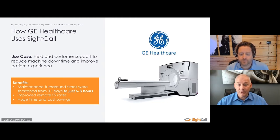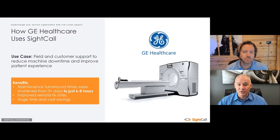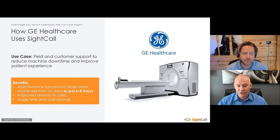GE Healthcare is another interesting example. They had a challenge in that they have medical imaging MRI machines located across different countries and continents that have to maintain very high uptime. Hospitals become reliant upon their medical imaging and simply can't tolerate any downtime. By leveraging SiteCall, they were able to dramatically shorten the turnaround time for maintenance issues from more than three days to just six to eight hours. It also allowed them to provide remote fixes by leveraging someone on site as remote hands, while using SiteCall as their remote eyes to guide the technician through the repair — a huge savings in cost and time.